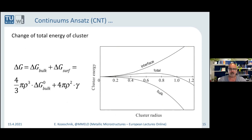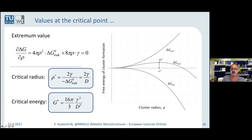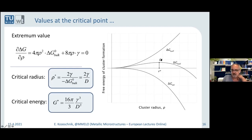The interfacial component scales with the square of the radius of the droplet or particle, and the volume energy with the cube of the radius. That will lead to the observation of a barrier. The barrier can be very easily evaluated in terms of the extremum value: you take the nucleation energy first derivative equals zero, and then you get the critical radius and the critical energy nucleation barrier. This nucleation barrier is an extremely central quantity because its shape will allow us to formulate nucleation rates for new particles.